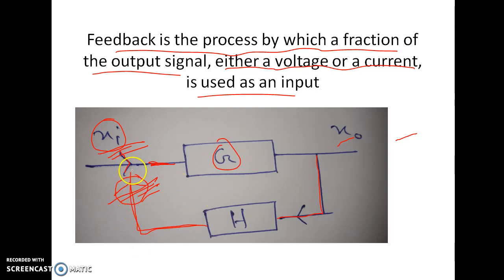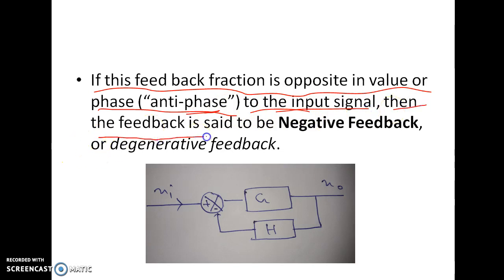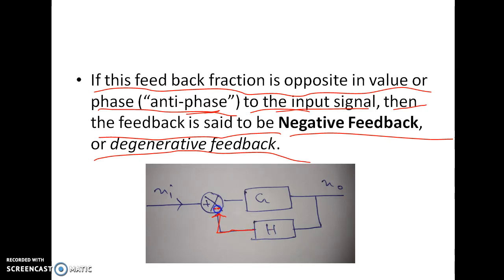And if we take the output as it is, with zero degree or 360 degree phase shift, and add with the input, that is called positive feedback. So as written here: if the feedback fraction is opposite in value or phase — that is anti-phase, meaning 180 degree phase shift with respect to the input signal — then the feedback is said to be negative feedback or degenerative feedback. What we have done is take the output from the H block, put a minus sign, and a plus sign at the input, so we are subtracting the feedback signal from the input signal.